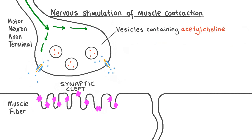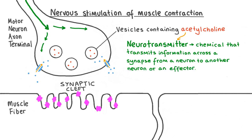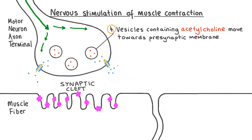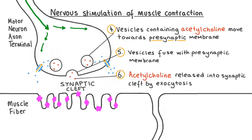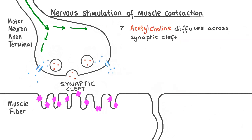There are vesicles within the synaptic knob containing a substance called acetylcholine, which is the neurotransmitter at neuromuscular junctions in skeletal muscle. A neurotransmitter is a chemical that transmits information across a synapse from a neuron to another neuron or from a neuron to an effector — in this case, our muscle fibre. The diffusion of calcium ions into the motor neuron stimulates these vesicles to move towards the presynaptic membrane, fuse with it, and release acetylcholine into the synaptic cleft by a process called exocytosis. Once released, acetylcholine diffuses across the synaptic cleft towards the muscle fibre.